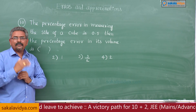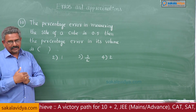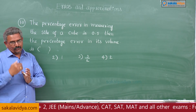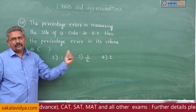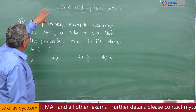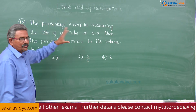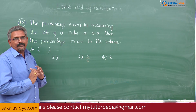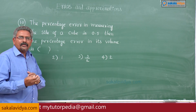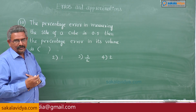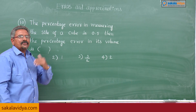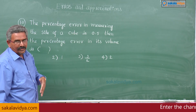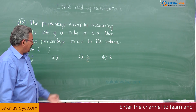Let x be the side of a cube. Its total surface area is 6x squared and volume is x cubed. According to the problem, delta x by x into 100 is given as 0.5, and we are asked to find delta v by v into 100. Since v equals x cubed, delta v by v into 100 equals 3 times the percentage error in x, that is 3 times 0.5.